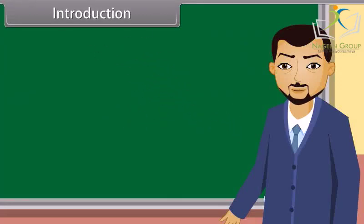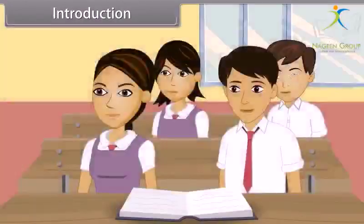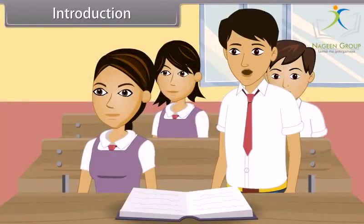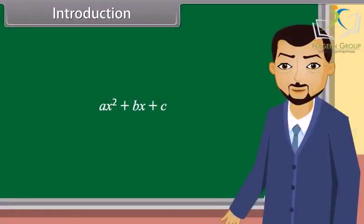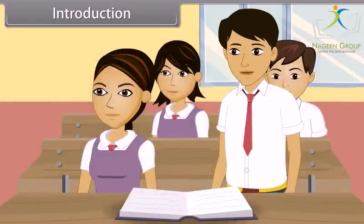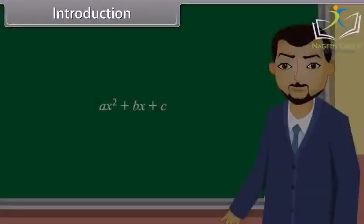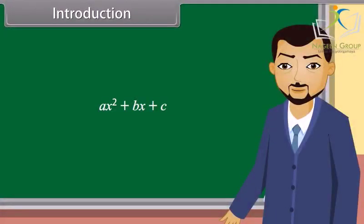Students, do you know what polynomials are? A polynomial is an expression of more than two algebraic terms. Can you tell which type of polynomial is this? Is it a quadratic polynomial? Correct. This is a quadratic polynomial. When we equate this polynomial to zero, we get a quadratic equation. Today we will learn about quadratic equations.